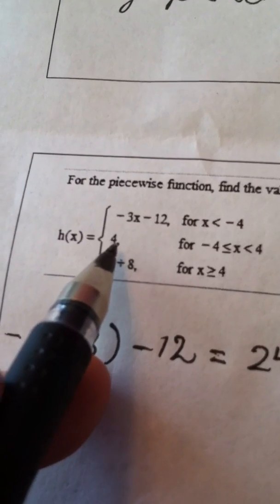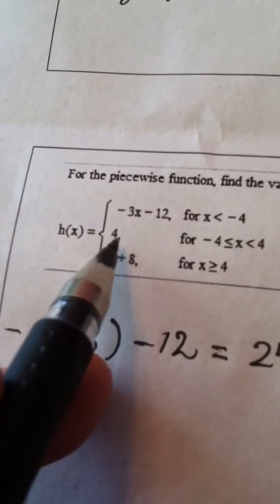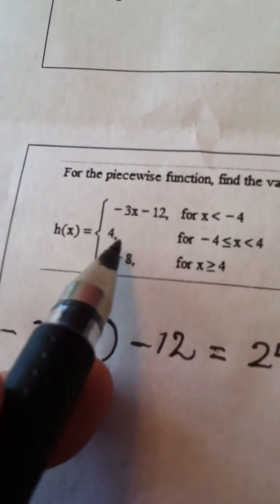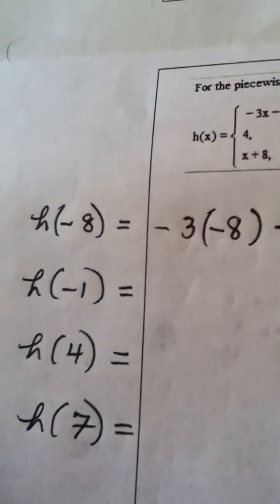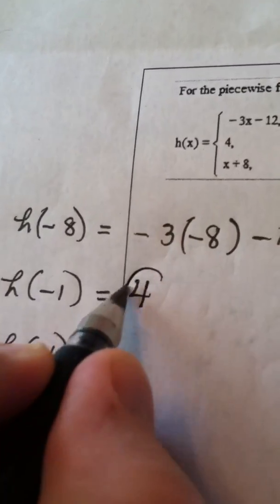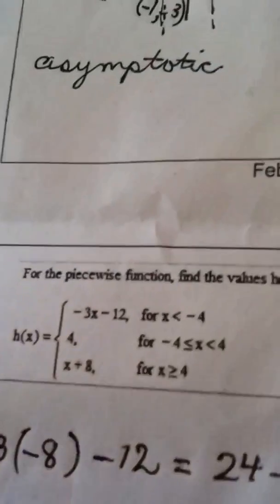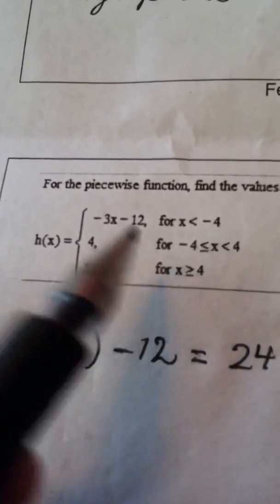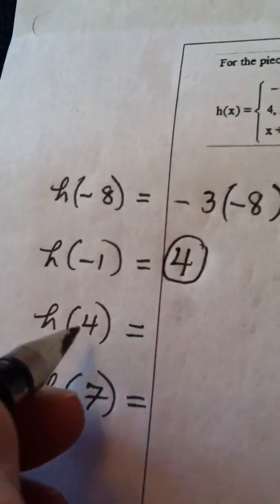Anytime you're on the middle tier, your answer to the problem is 4. There's no work to do. Whenever you see an answer like this that has no x in it, that means it's constant. So h of negative 1 is 4. There's nothing to plug in. 4 is a constant answer for that middle tier.